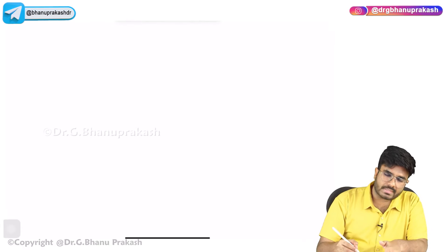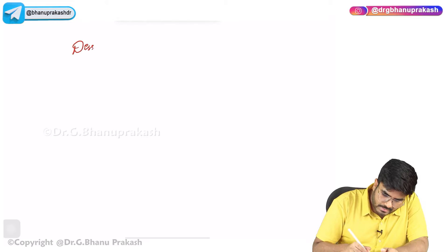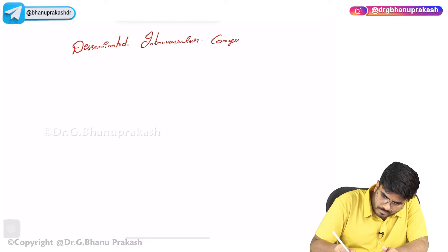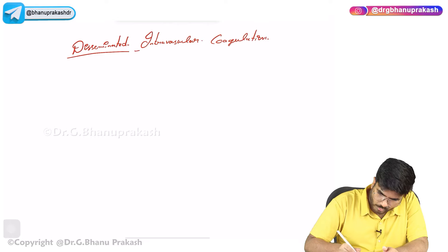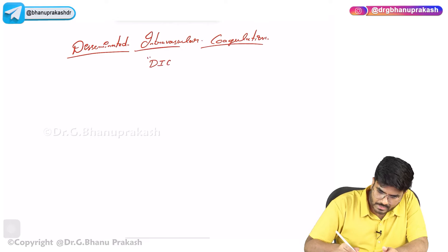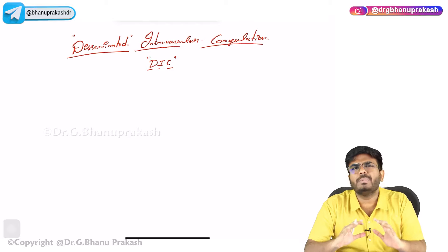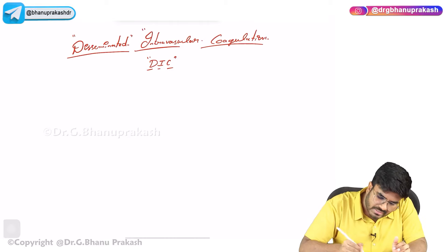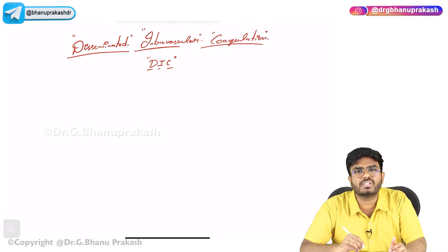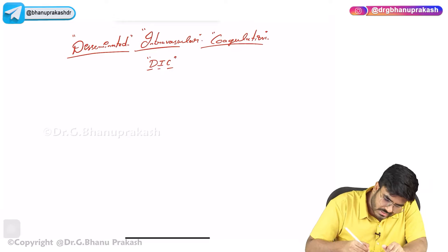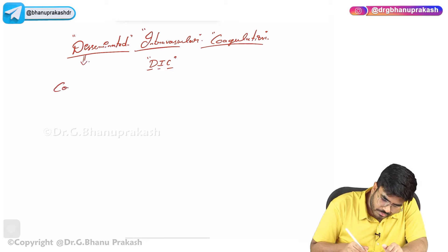Welcome back. In this video, let's discuss a condition called disseminated intravascular coagulation, simply called DIC. Looking at the name itself, it's very clear: disseminated means throughout the body at multiple places, not just localized to one place. Intravascular means within the blood vessels, there is unnecessary pathological coagulation. DIC is a consumptive coagulopathy.